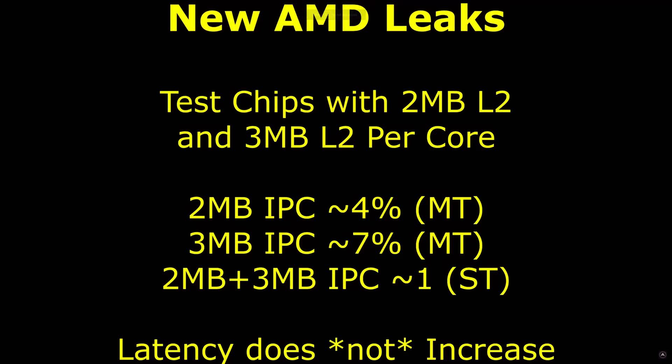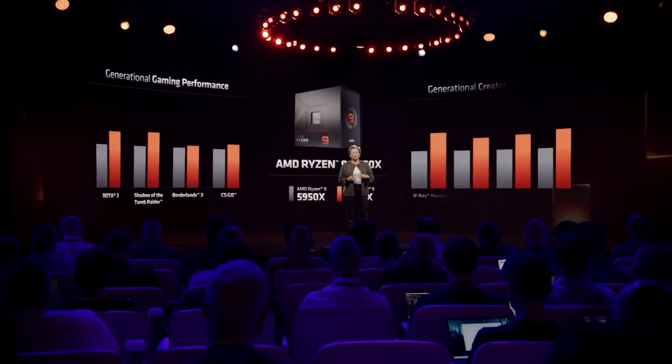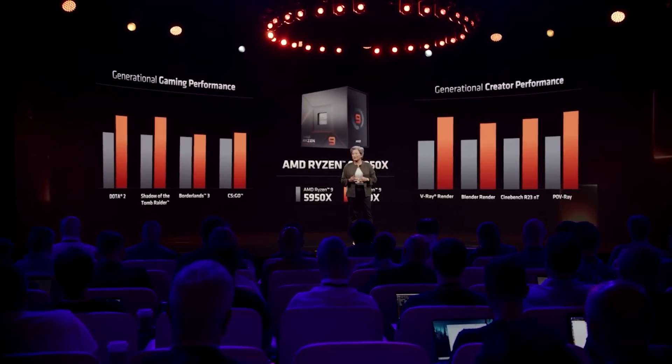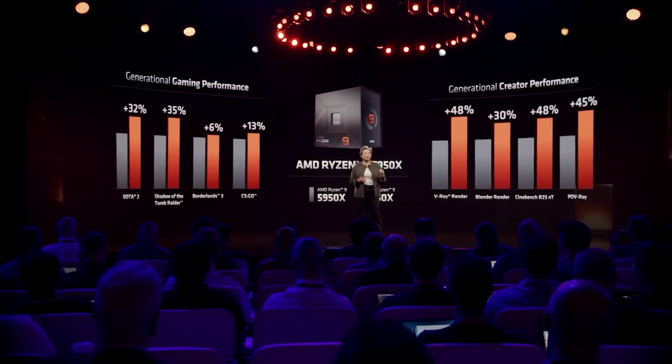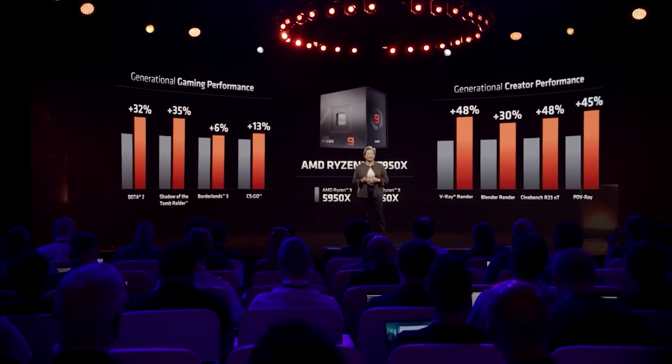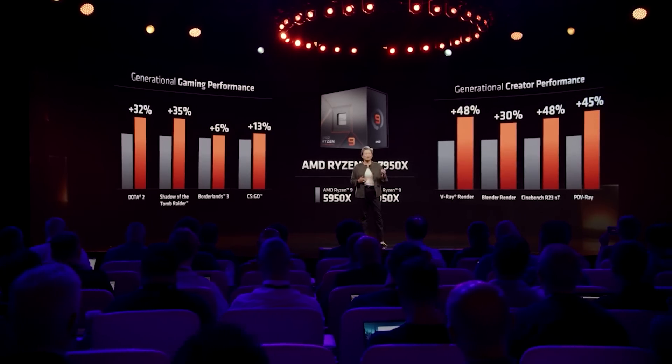Adore TV's Jim had also reported some chip variants were being tested with one, two, and three megabytes of L2. But for the retail SKUs, it does seem it's only one megabyte. According to Jim's information — and I've had multiple sources tell me he's correct — there was up to a 7% increase in performance, depending on the workload and number of threads, for the three megabyte L2.